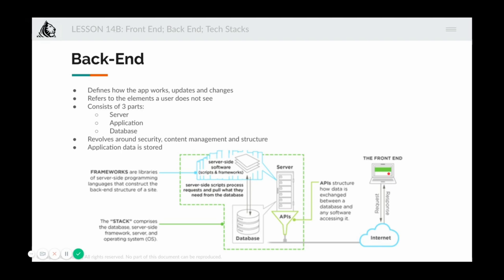That is when you see the white heart show up on an image in Instagram. You double-tapped on an image; this was captured via the front-end framework — whether JavaScript on web or iOS/Android on app — sent to the back-end, which validated it, stored it in the database, and sent the confirmation back. You can imagine all of this happens in the fraction of a second that you see that heart appear.